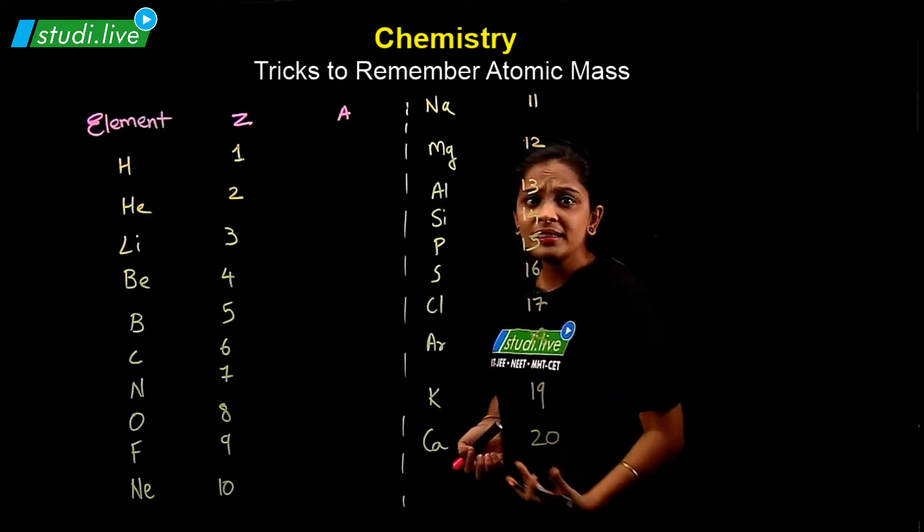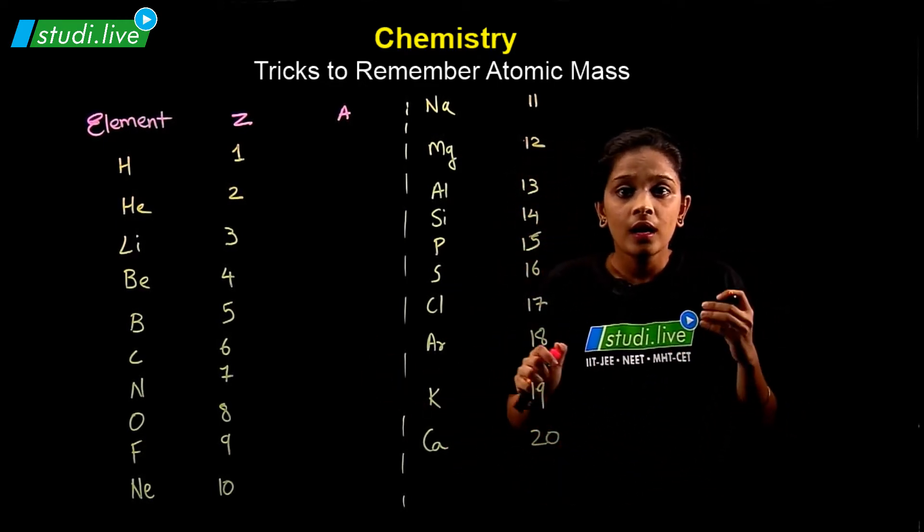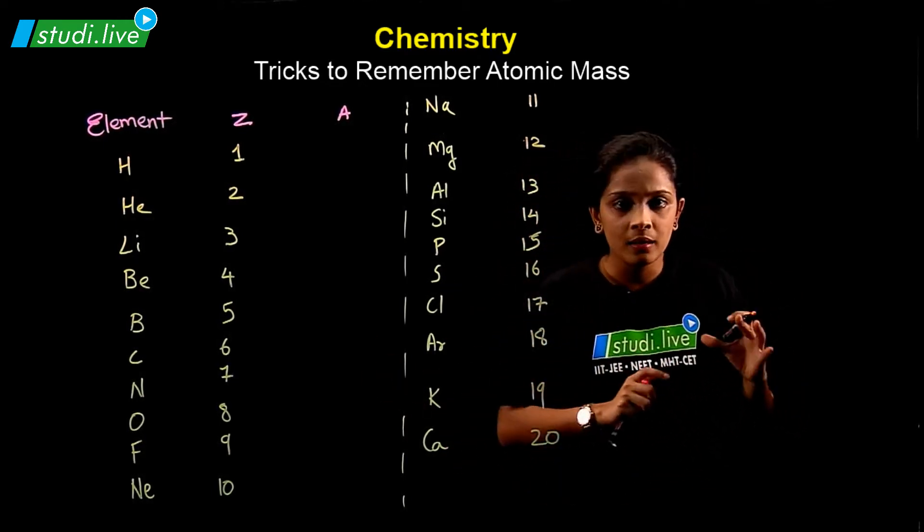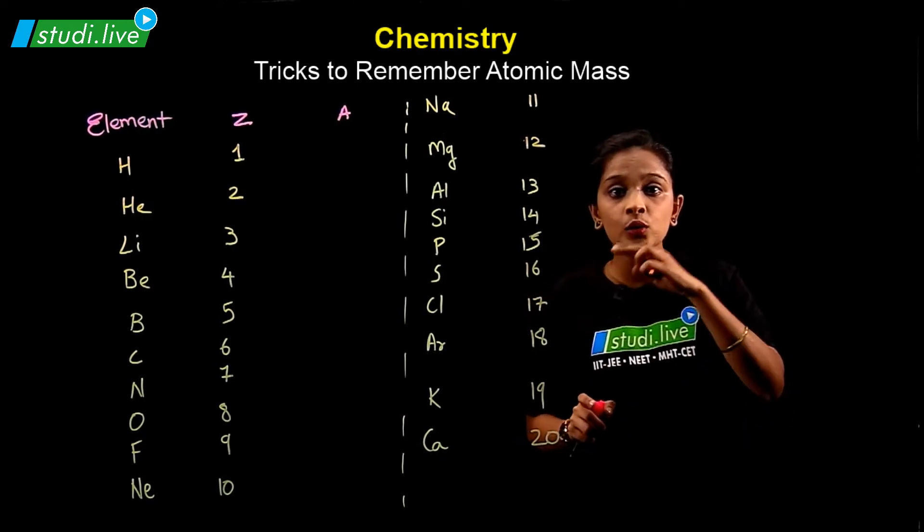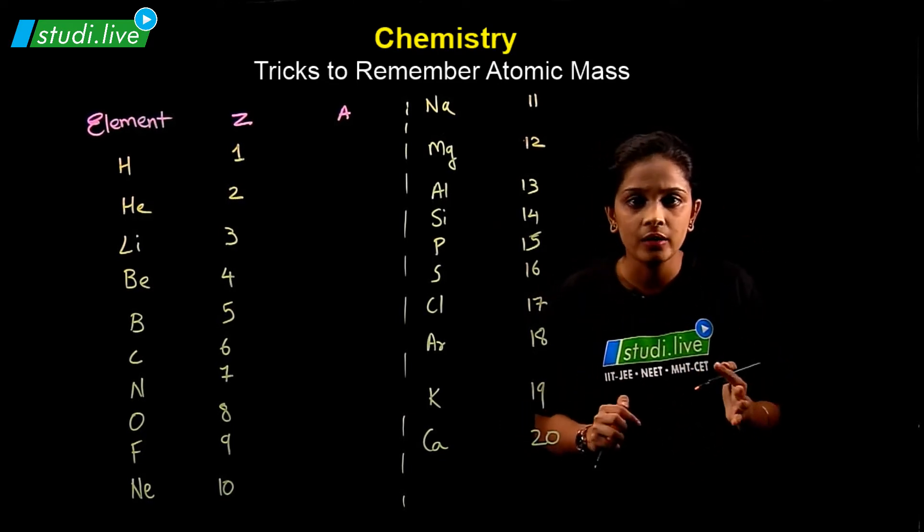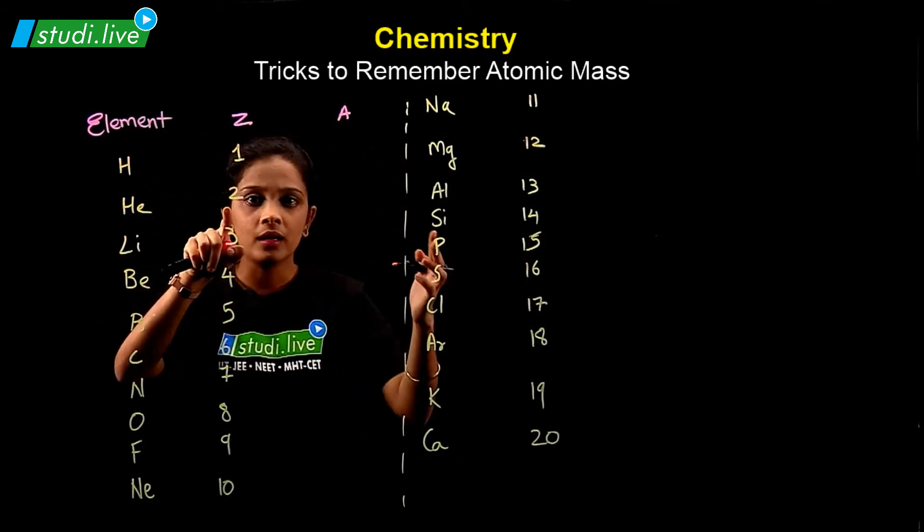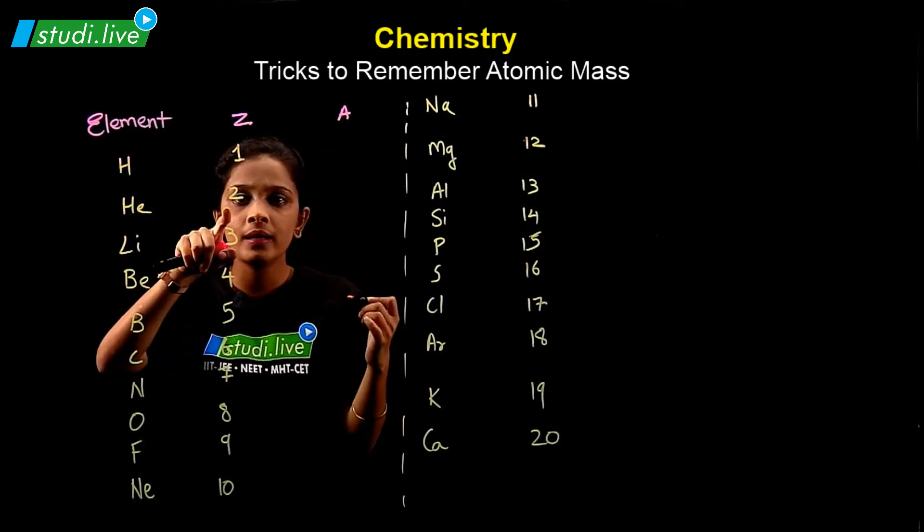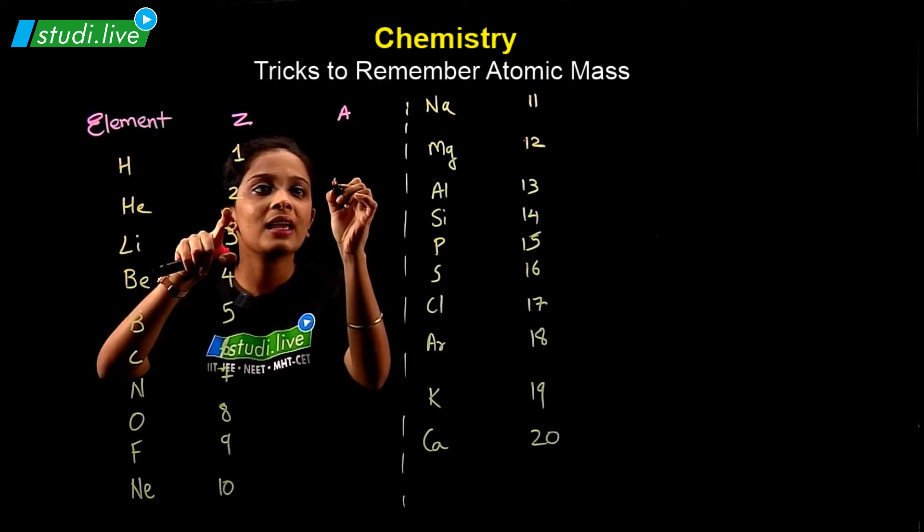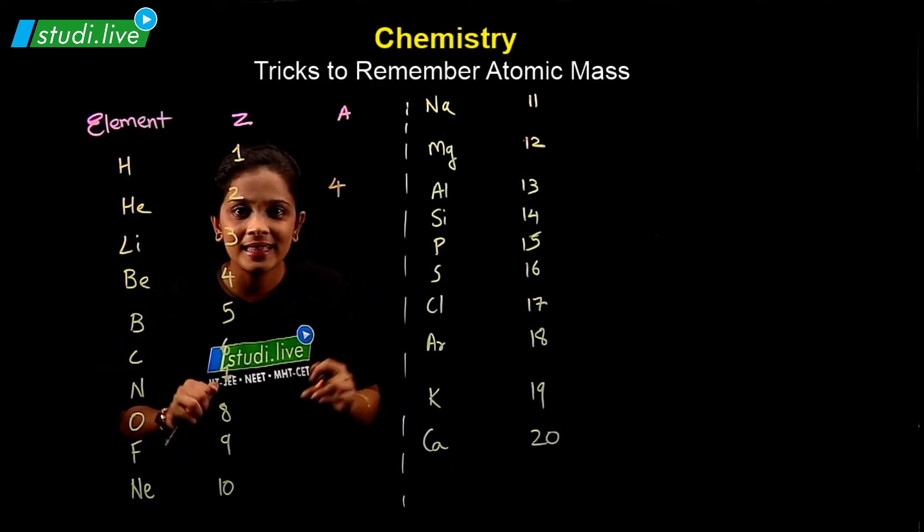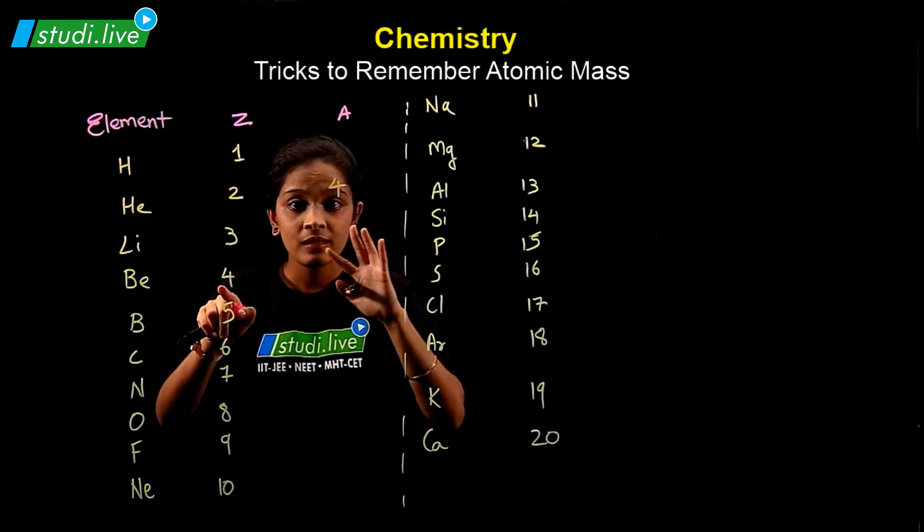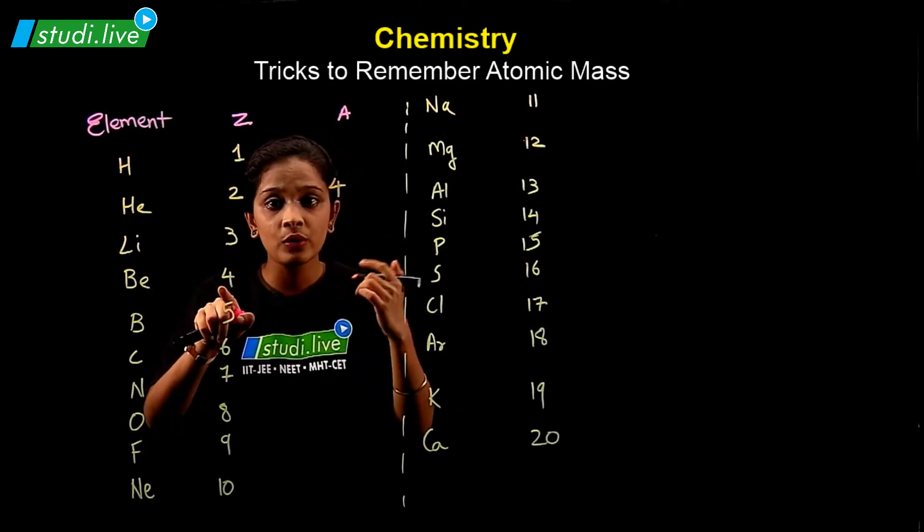So the trick is something like this, student. For even numbers, for even numbers, do double of that Z value. So let's see, we have even number as 2. So do a double to get the A value. So two double is two twos are four. So its A value is four. Easy? Lithium, okay. Beryllium is 4, that is even number, you double.